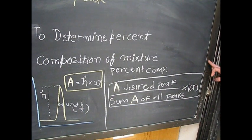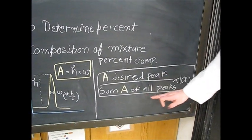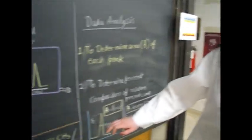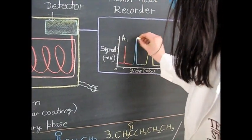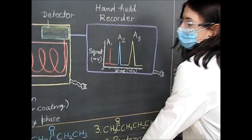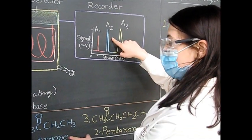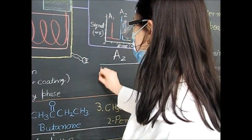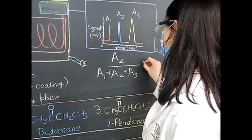The formula for percent composition is the area of your desired peak or compound divided by the sum of all the areas of the peaks in the graph and multiplied by 100. For example on this graph, if we consider this A1, A2, A3, we would calculate percent recovery of A2 which we know to be butanone as that area divided by A1 plus A2 plus A3 and then multiplied by 100.